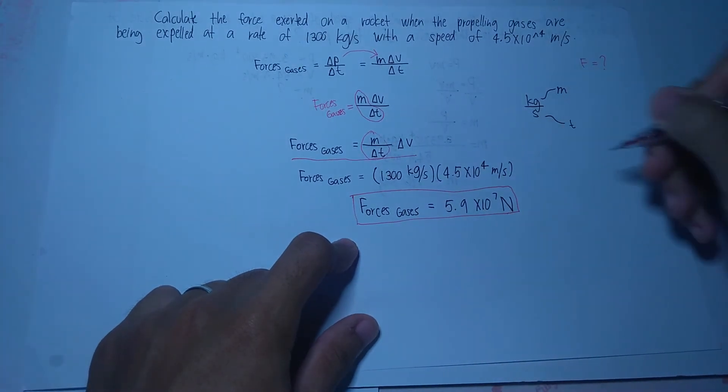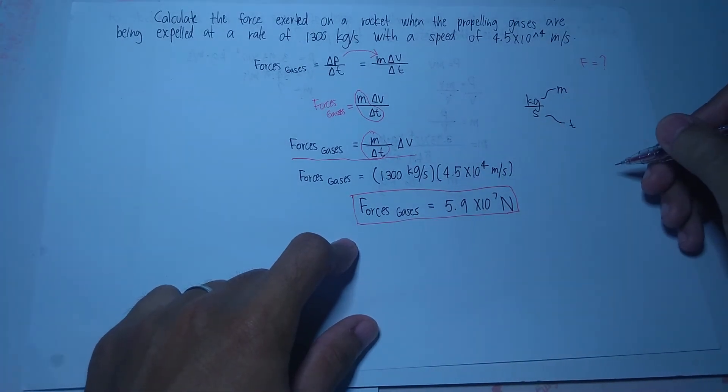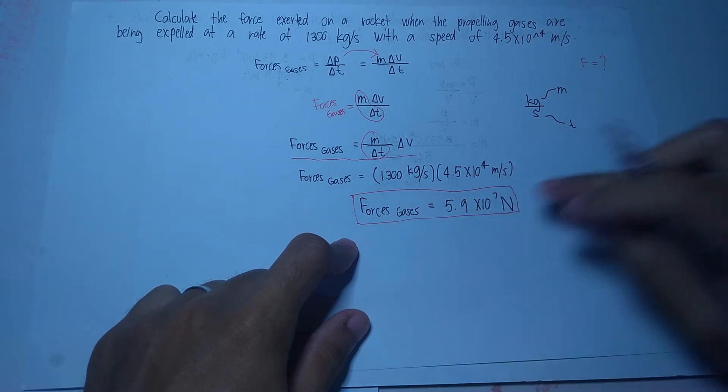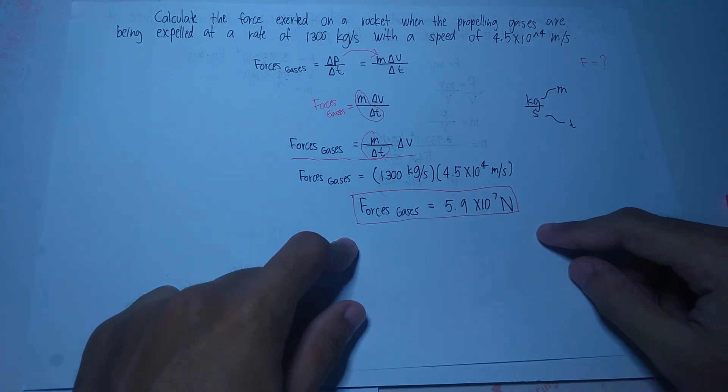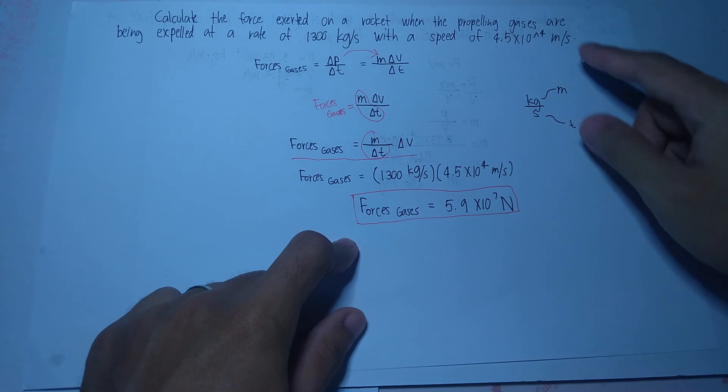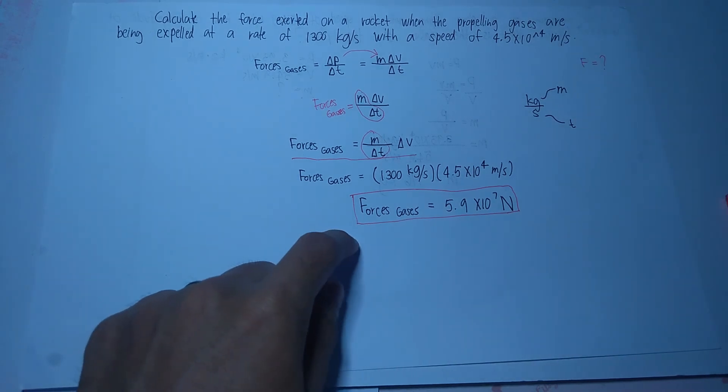So, ang total answer na makukuha natin is 5.9x10 raised to 7 N. So yan yun yung force na na-exert on the rocket kapag nag-propel yung gases. So ganyan lamang natin sya isosolve.